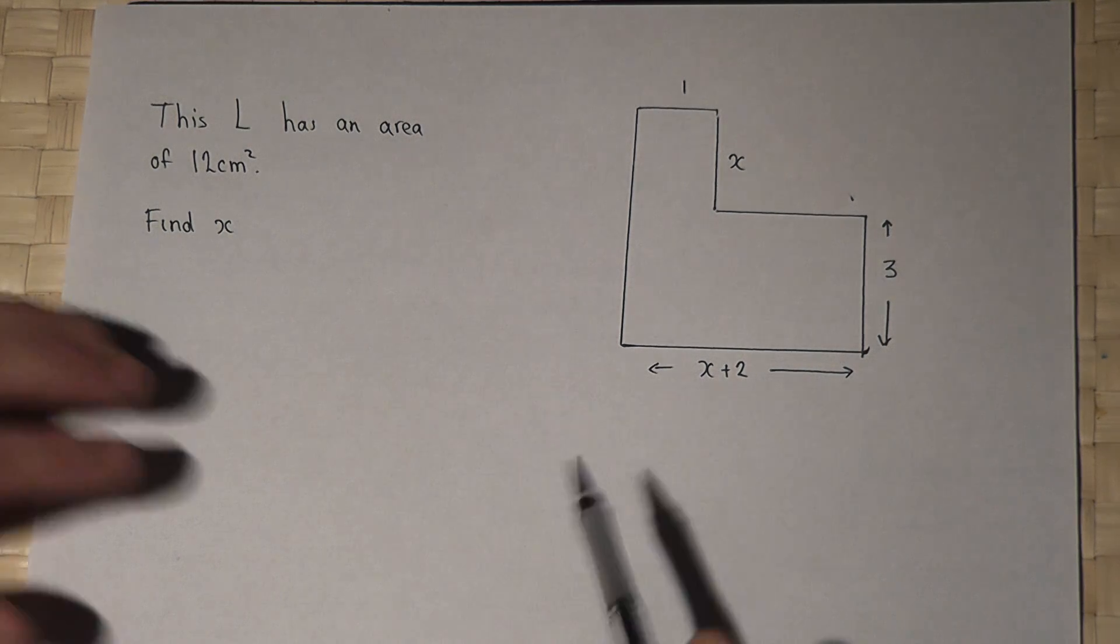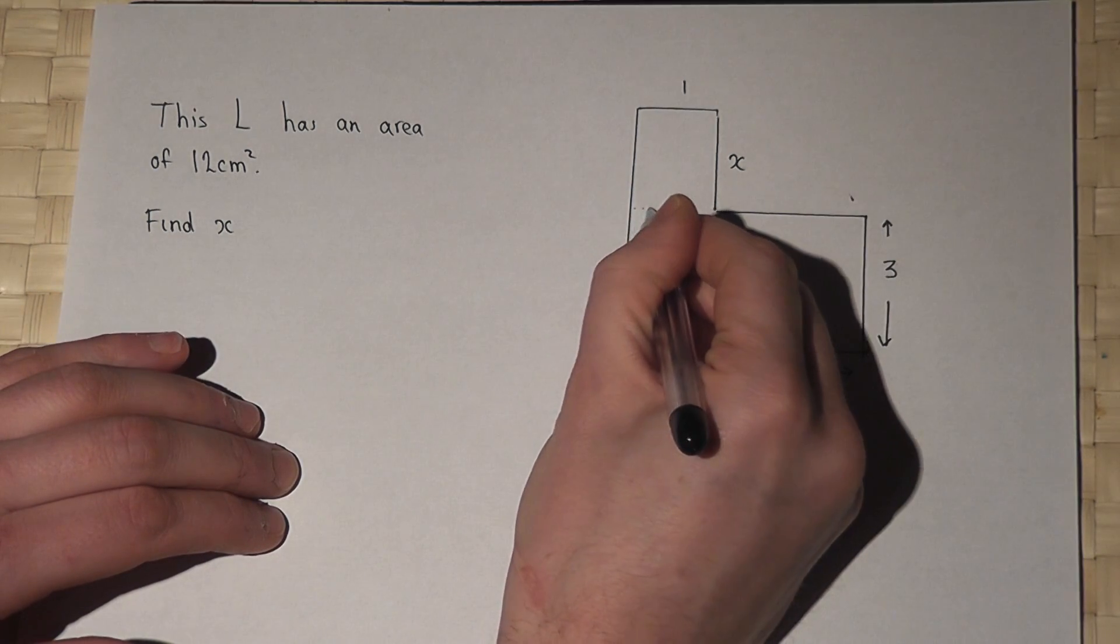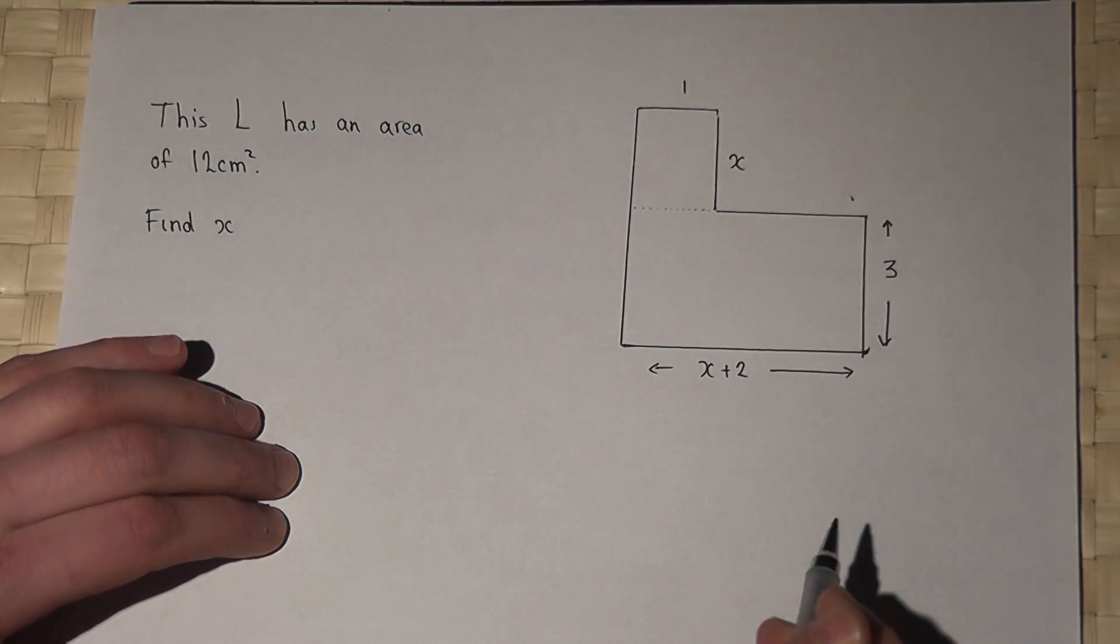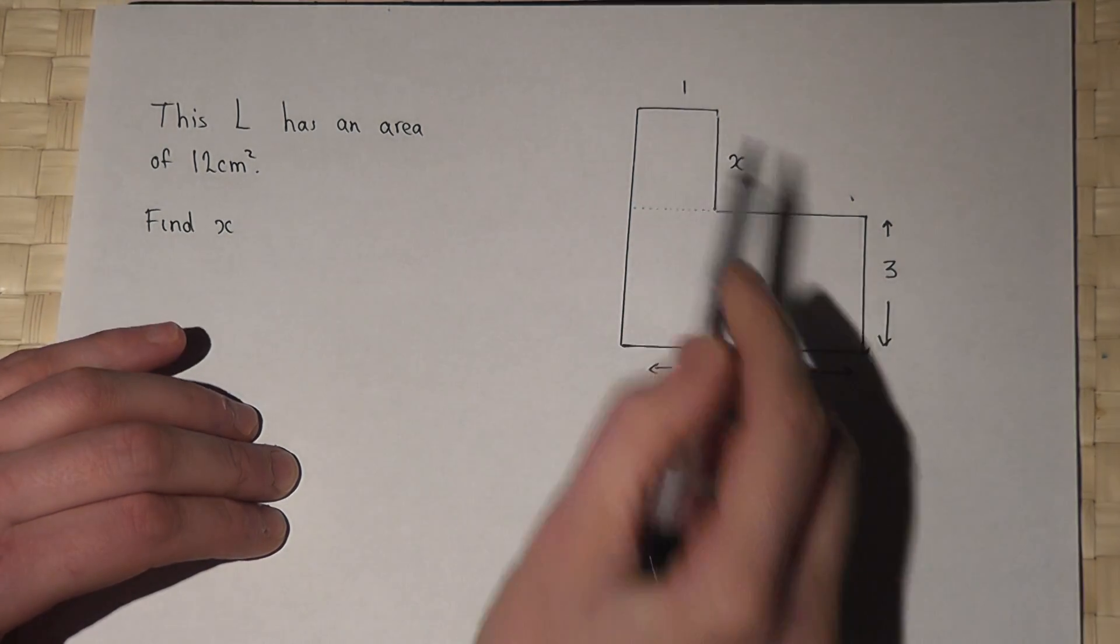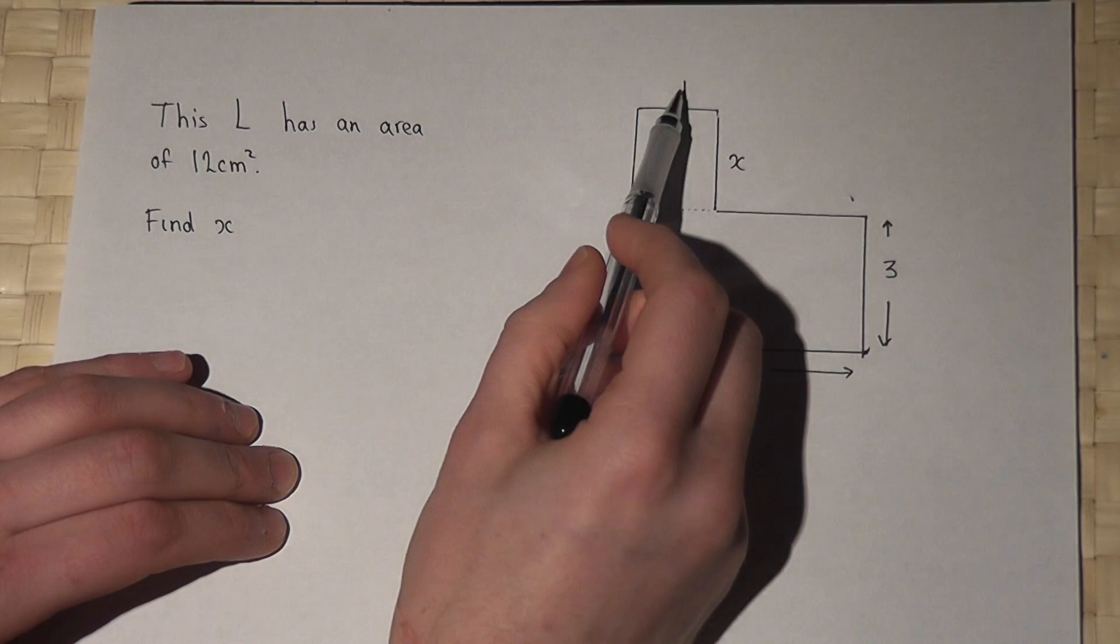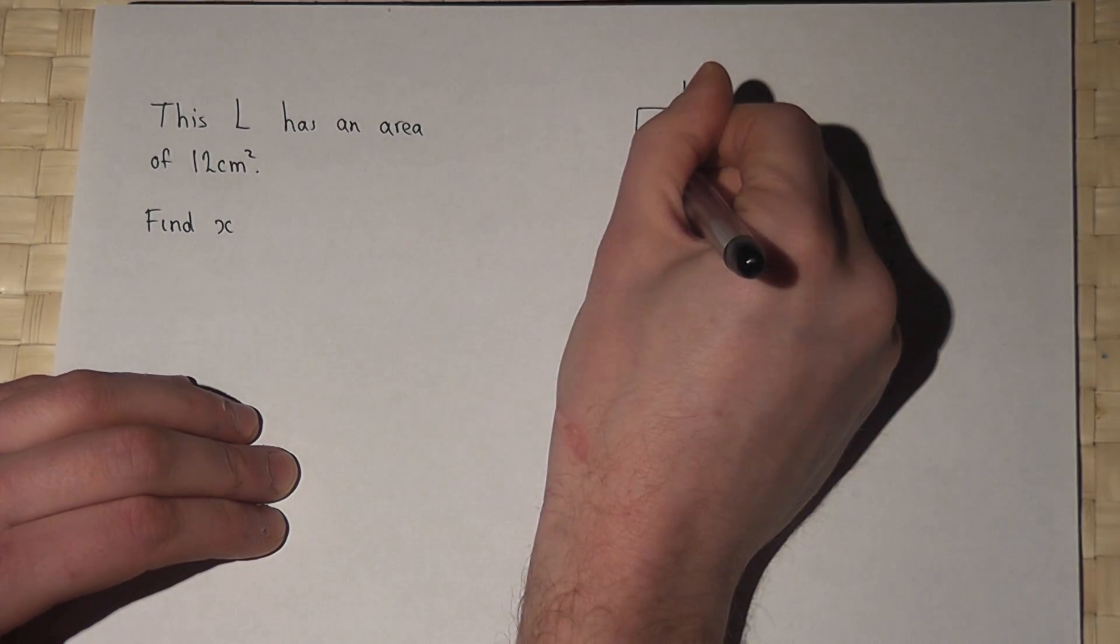Now the method here is to see this as two separate rectangles. The top part's got an area of 1 times x, which is x.